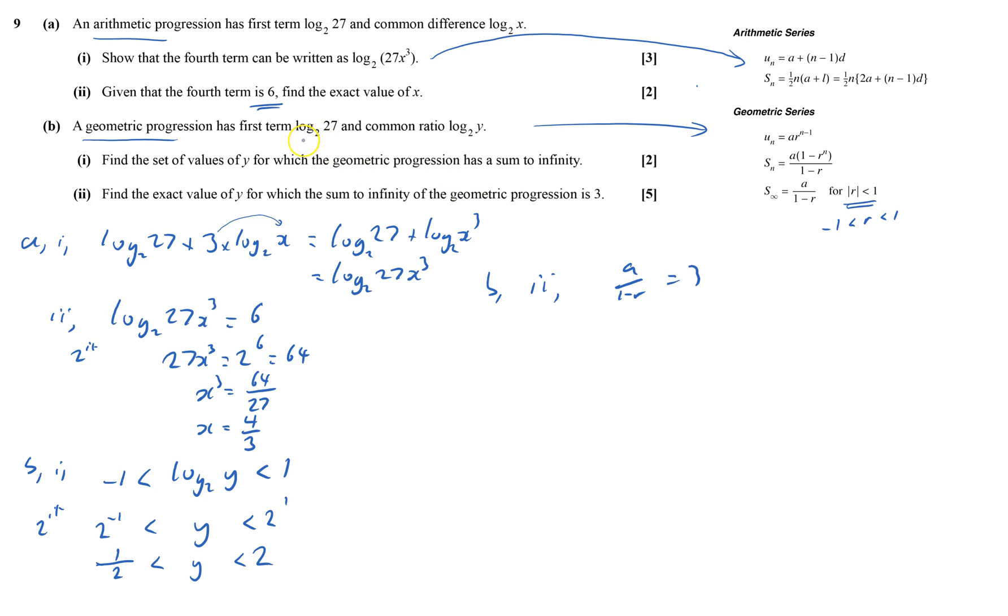And we want to find out when does that equal 3. So times everything through by the bottom bit, 3 lots of 1 minus log to base 2 y.